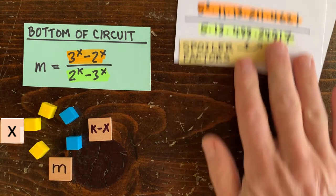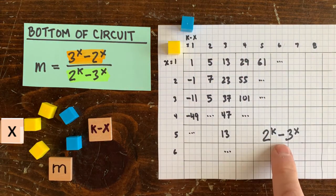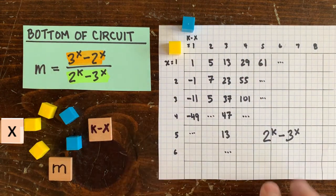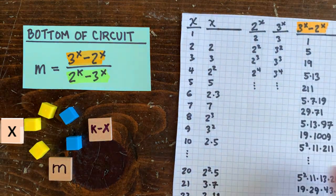So we'd like to show for every choice of k and x there's some spoiler factor down here in the denominator. The trouble is these prime factorizations look pretty random. So let's see if we can find some patterns.